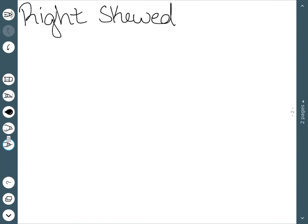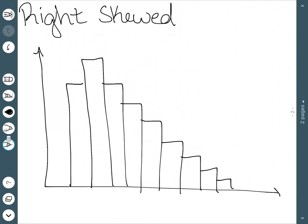The next one we'll look at is called right skewed. Right skewed distributions tend to look like this. The peak is here on the left, and then it has a tail to the right.